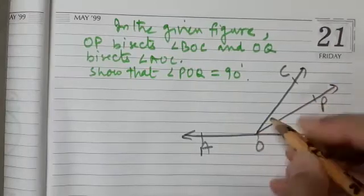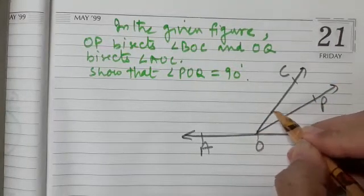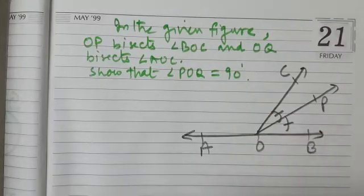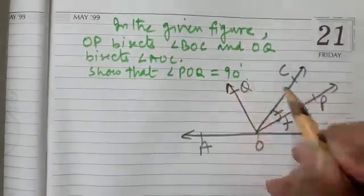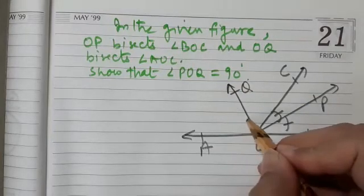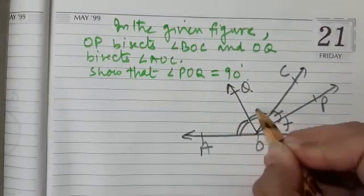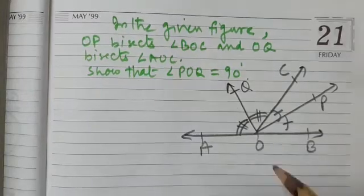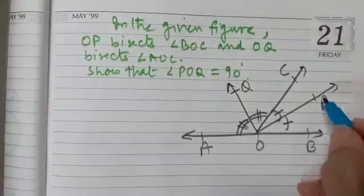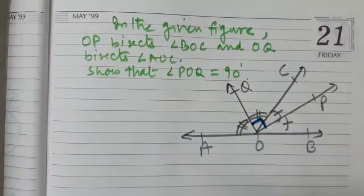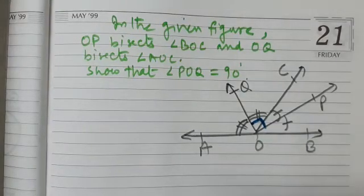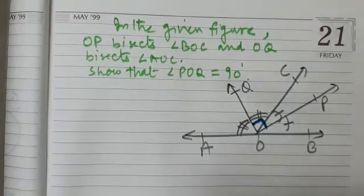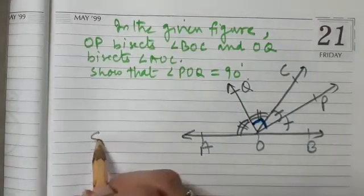It is given that OP bisects angle BOC, so these two angles are equal. It is also given that OQ bisects angle AOC, so these two angles are also equal. We have to show that angle POQ equals 90 degrees — a very simple question.